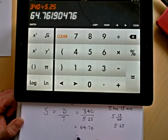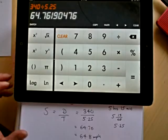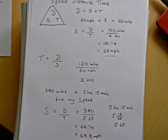And so it is 64.76. We'll round that down to one decimal place, 64.8, and the speed would be in miles per hour. And I think you can just see me squeezing that in at the bottom of the page.